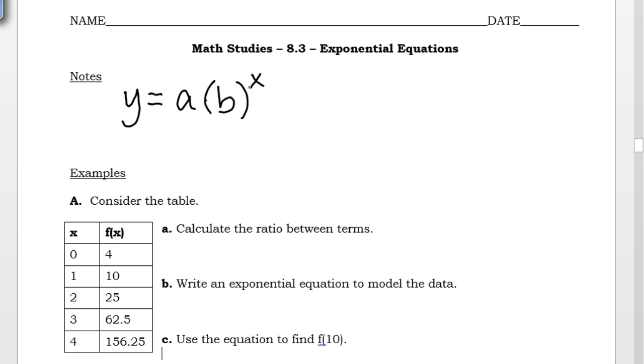If we want to use more traditional function notation, f of x instead of y equals, a is the y-intercept, or the starting value. And so in function notation, that is f of 0. Wherever x is 0, the corresponding y value, that is your intercept, your starting value.